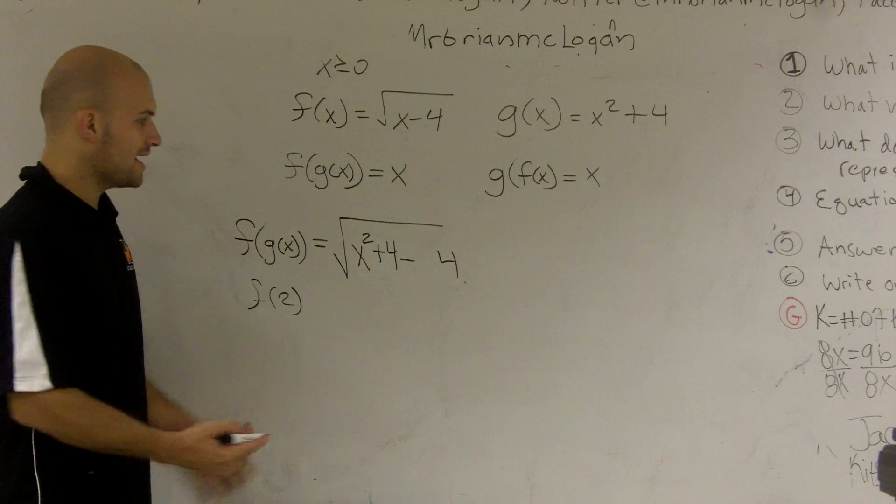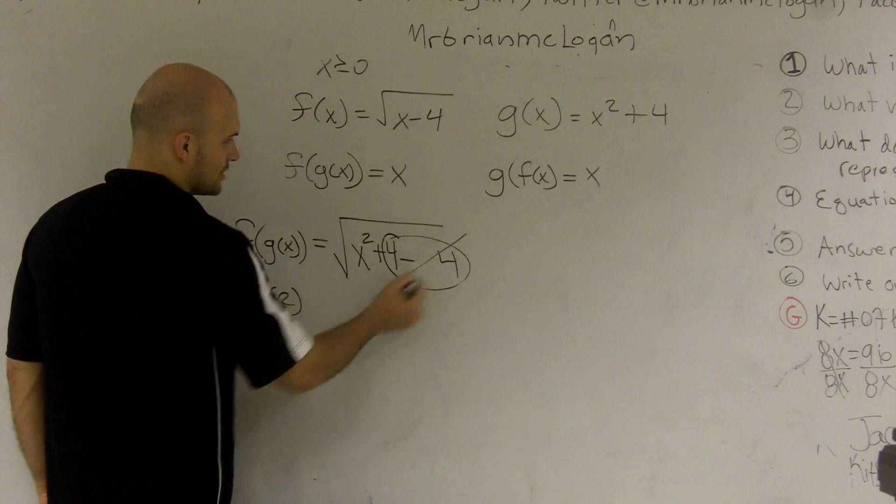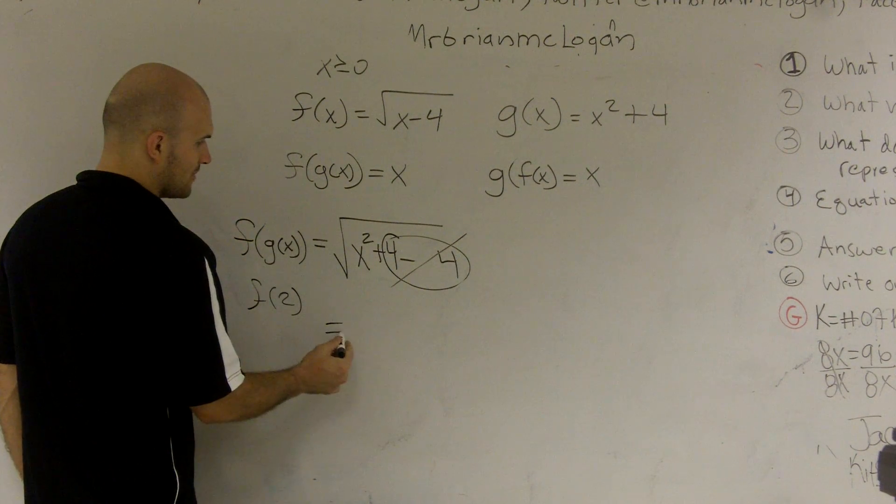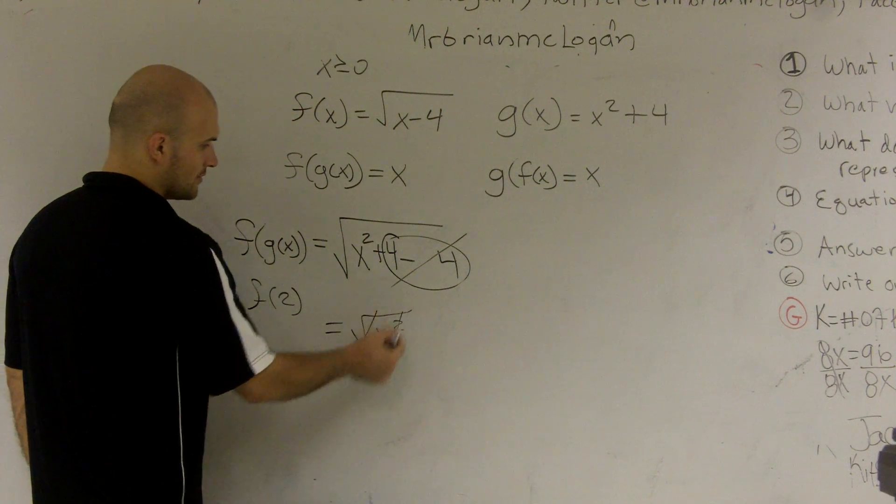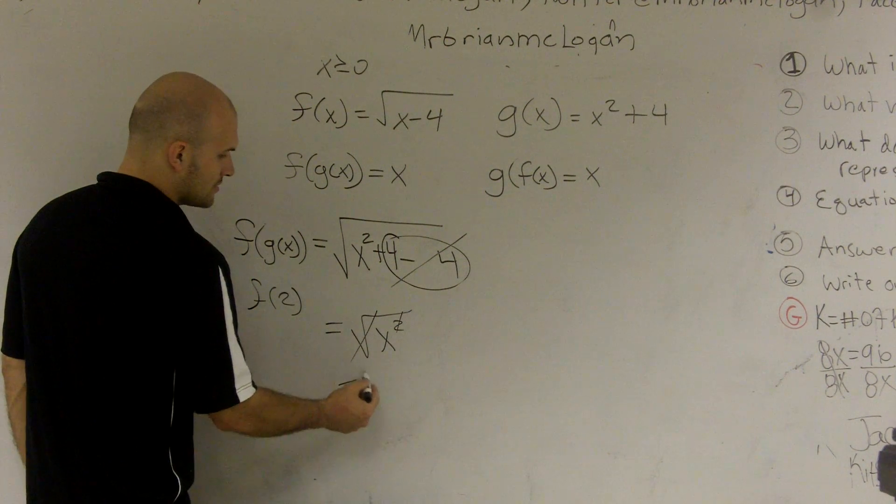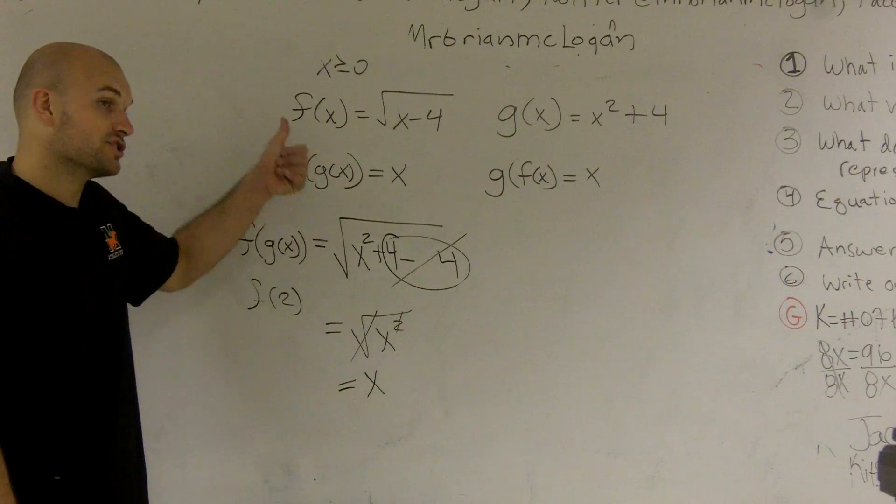Make sense? So now what you can see is these two cancel each other out. Therefore, I'm left with square root of x squared. Those cancel out. So I'm left with an x. So therefore, it's good on this one.